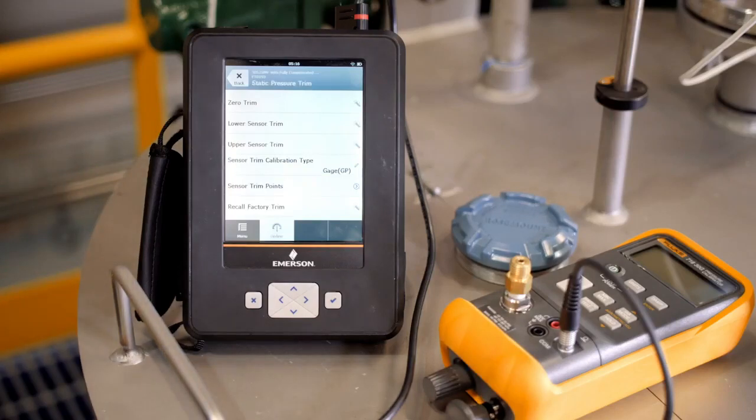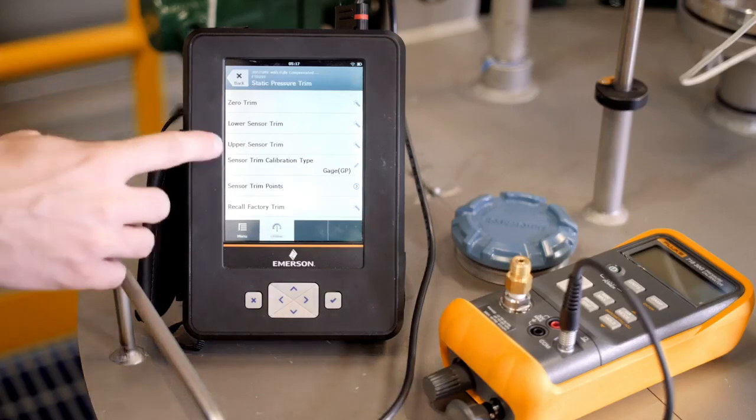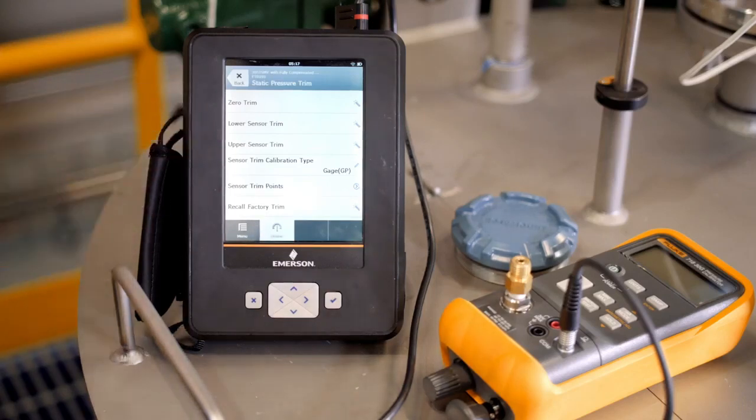For gauge transmitters, the measurement is referenced against atmospheric pressure and requires a zero trim and upper sensor trim. However, in an absolute transmitter, the procedure is slightly different. Since absolute transmitters are referenced against a vacuum, a lower sensor trim will need to be completed instead of a zero trim. All other steps remain the same. Just like the DP sensor, the calibration of the static pressure sensor is comparable to its single variable counterpart.